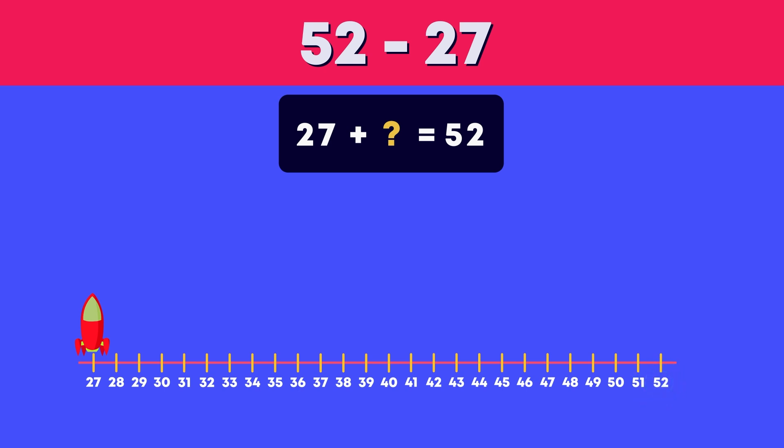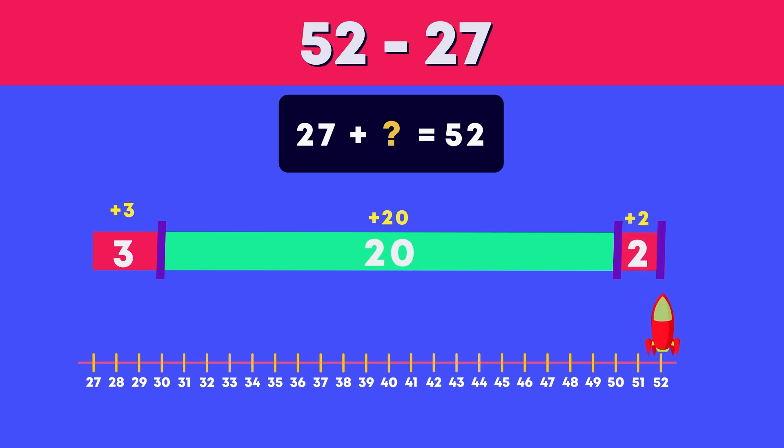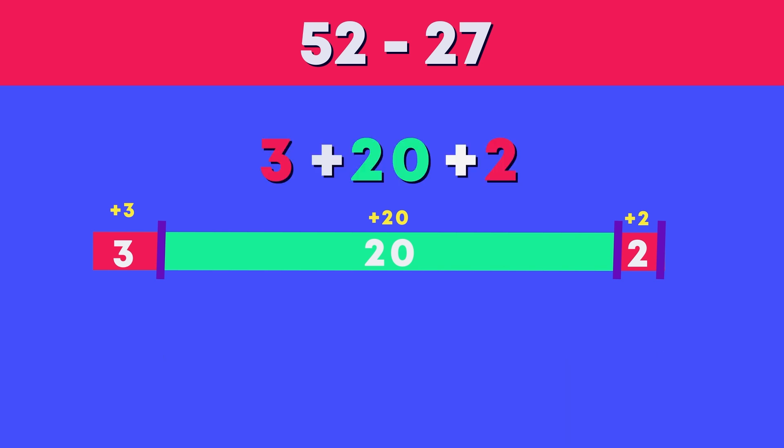Step one: What do I need to add to 27 to get to the next multiple of 10, which is 30? Add 3. Well done! Step 2: Bridge to the number of tens in the bigger number. What do I have to add to 30 to get to 50? 20. Correct! Step 3: 50 plus what equals 52? 2!